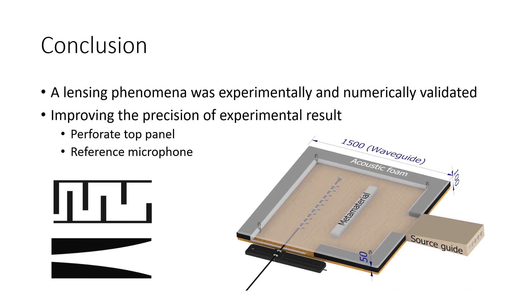All in all, a lensing phenomena has been experimentally and numerically validated with a horn-like space coiling metamaterial. For future work where precision is crucial, the transparent top panel can be perforated with holes above the diameter of the microphone. Acoustic response at the transmission site can be probed by suspending the transducers in the slots created. This removes the interaction between any unrelated component apart from the metasurface with the propagating wave.